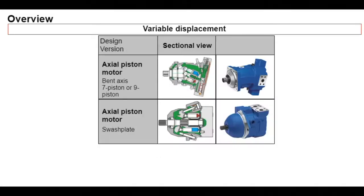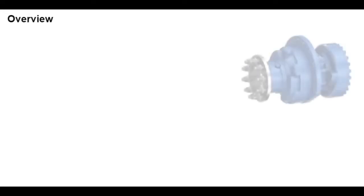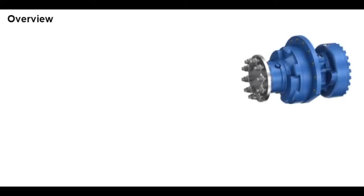Swashplate variable motors operate at a nominal pressure of up to 280 bar, 4,000 psi, or in the medium pressure range. Rexroth MCR motors are radial piston motors with external support that are available as fixed displacement motors or as switching motors. The switching motor can operate at full or half displacement.